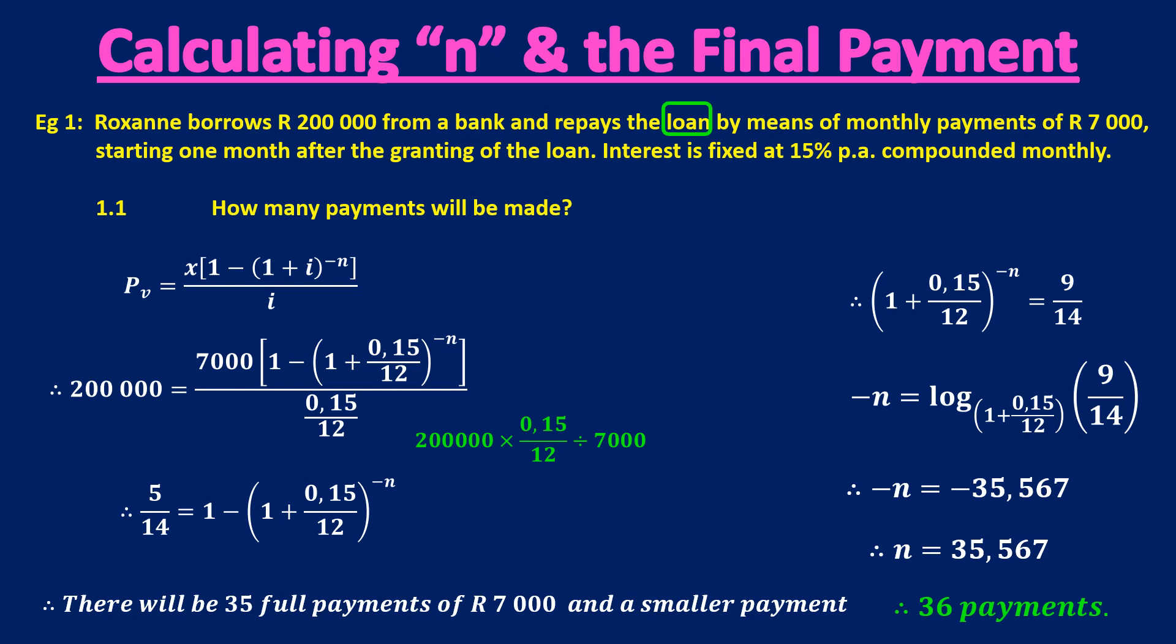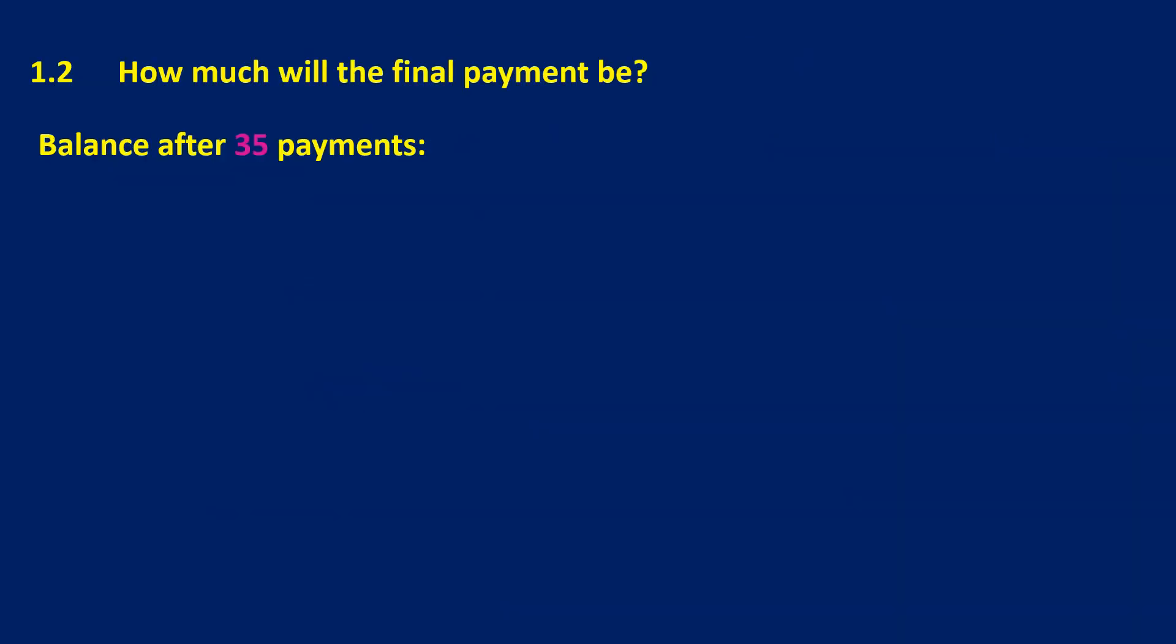The second part of this question is how much will the final payment be? And the method I'm going to use is using balance outstanding. So she makes 35 full payments. So I want to see how much does she owe after making 35 full payments.